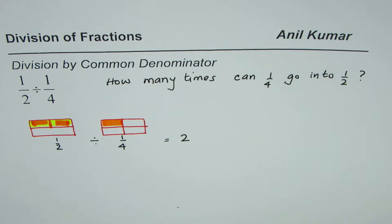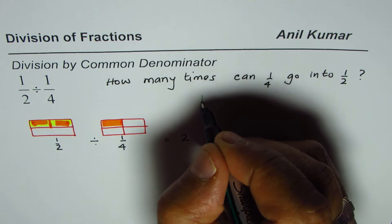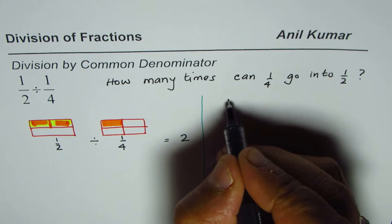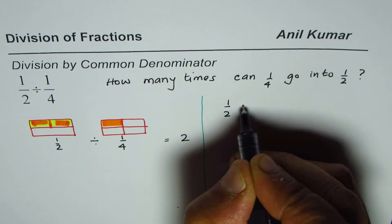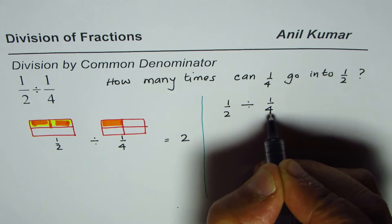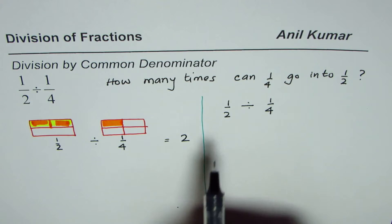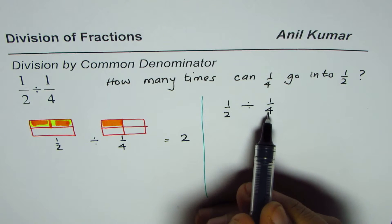Now here is another way of working on it. We are trying to divide half by one-fourth. Let us make the denominators common. Four is the lowest common denominator, so to make it four, we have to multiply numerator and denominator by two.